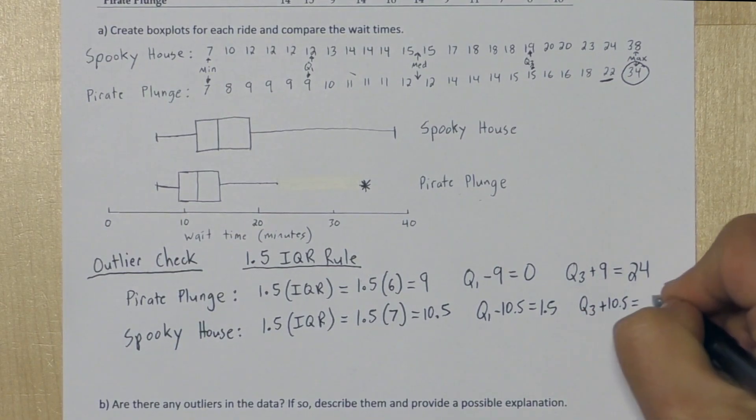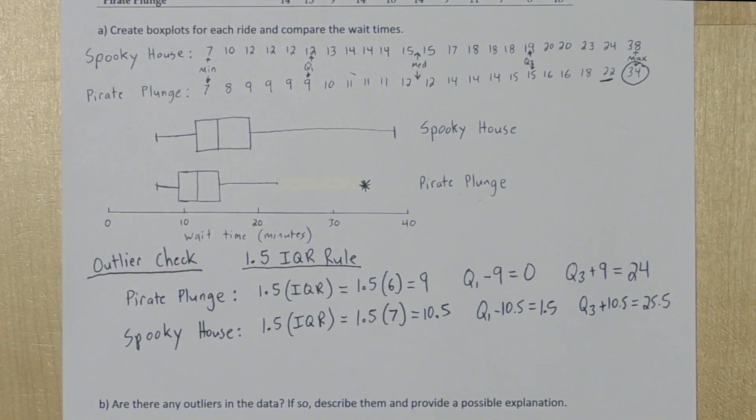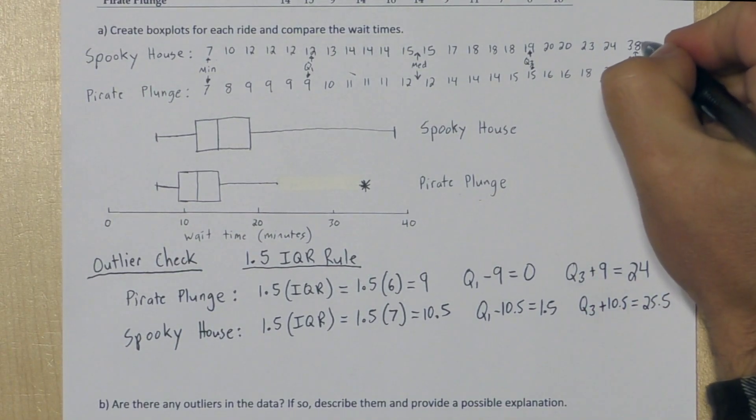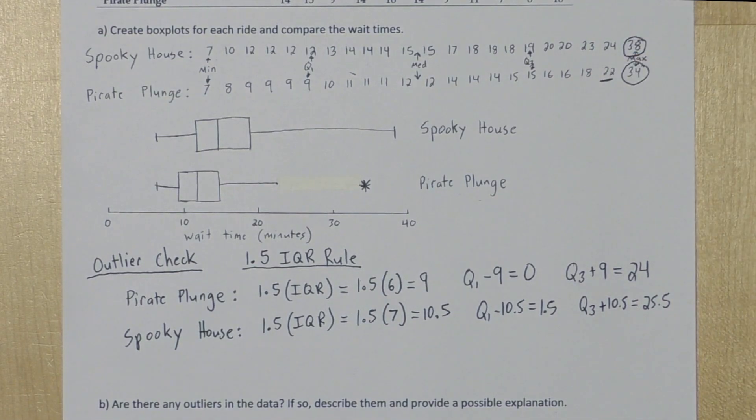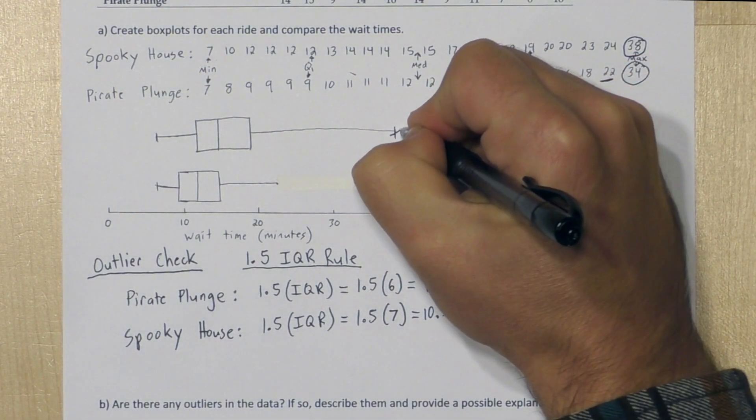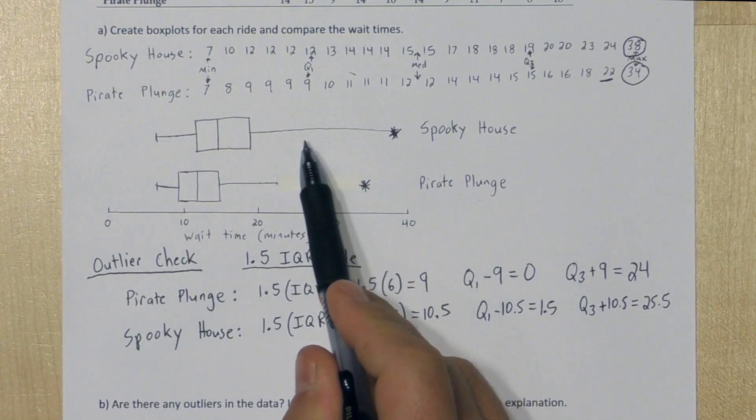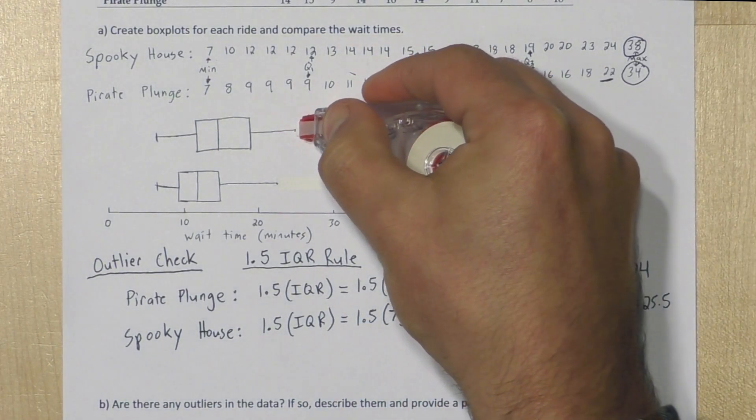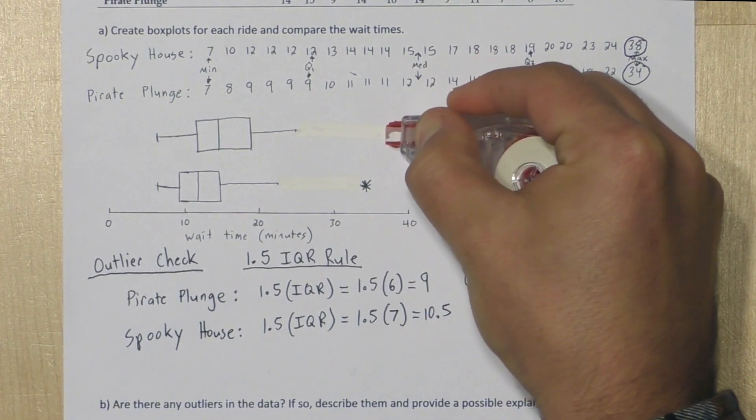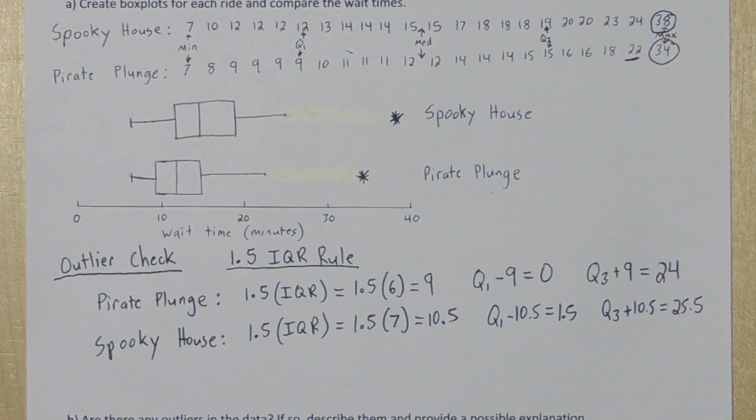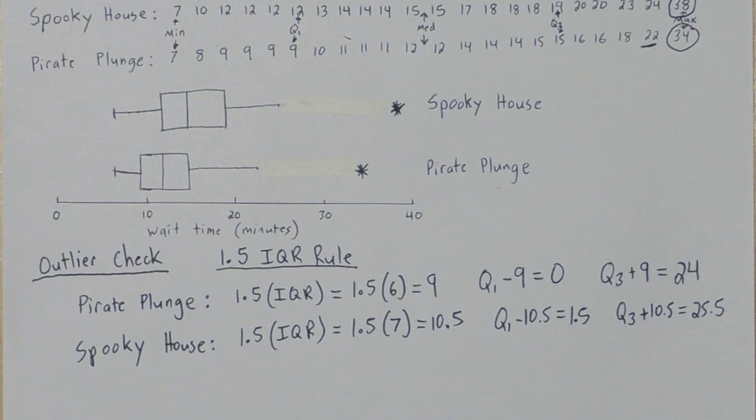When we check for upper outliers, we get 25.5. And again, we have an upper outlier at 38. So we're going to replace that 38 with an asterisk. And we're going to erase this whisker all the way down to 24, which is the longest waiting time that isn't an outlier. And there we have it. We've checked for outliers, and we've modified these box plots.